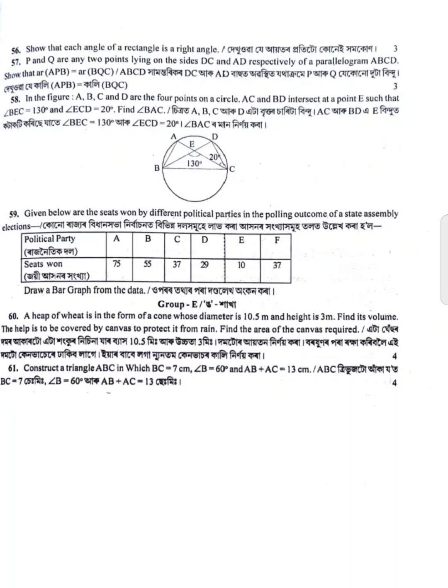Political party A won 75 seats, B won 55 seats, C won 37 seats, D won 29 seats, E won 10 seats, and F won 37 seats. Draw a bar graph of this data. Also, consider triangle ABC.